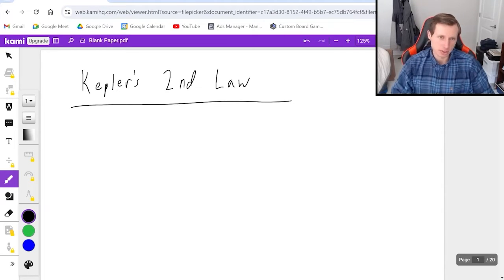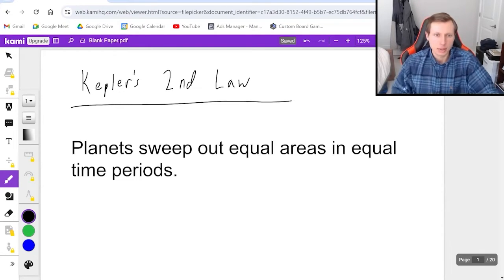In the last video, I talked about the first law. I guess in the next video, I'll talk about the third law. Kepler's second law basically says this: planets sweep out equal areas in equal time periods.